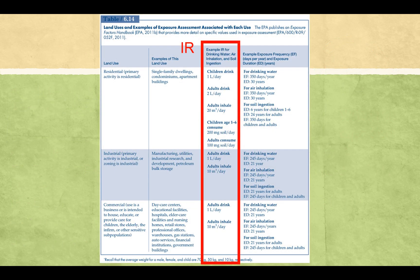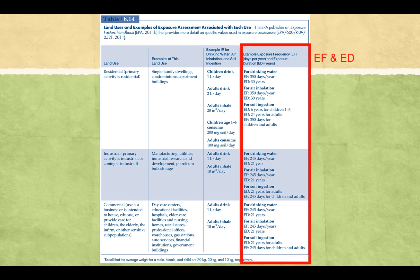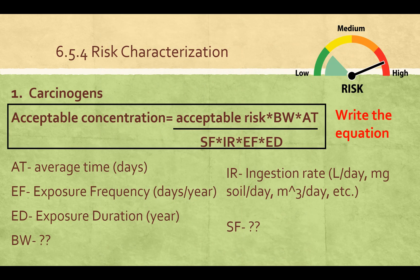Table 6.14 is where you'll find your ingestion rates in the third column, and you'll find your exposure frequency and exposure duration in the last column. It's really important to read the problem to determine whether the exposure is residential, industrial, or commercial — that's where you can get these problems wrong by putting in the wrong variables. You'll be given these tables on an exam and in the FE manual.